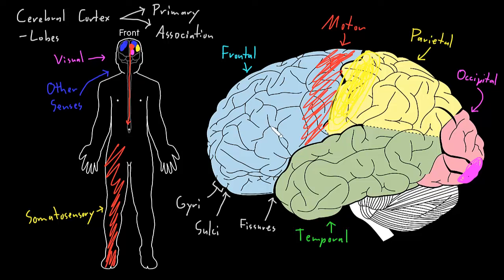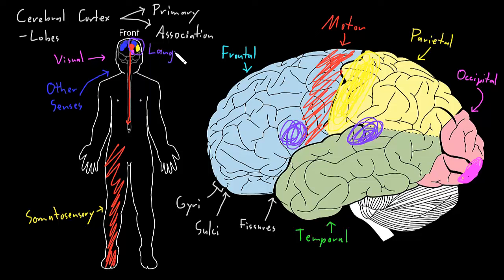One aspect of cognition is language — the ability to turn thoughts into words and vice versa. In most people, that's performed by certain areas of cerebral cortex in the left hemisphere. Some people have language functions on both sides or even predominantly on the right side, but most people have language functions occurring in the left cerebral hemisphere or predominantly there.